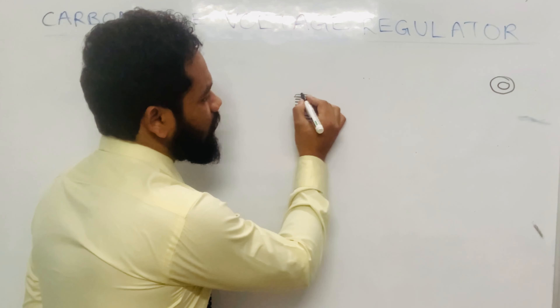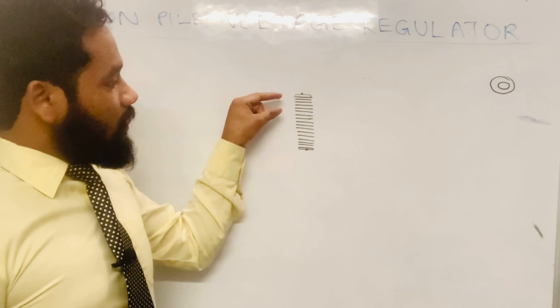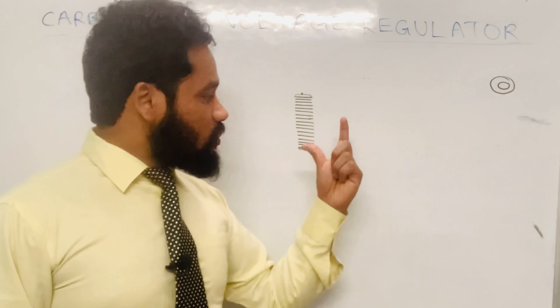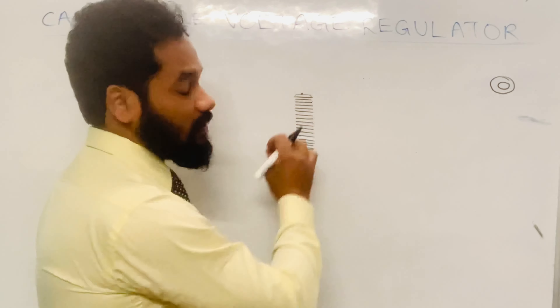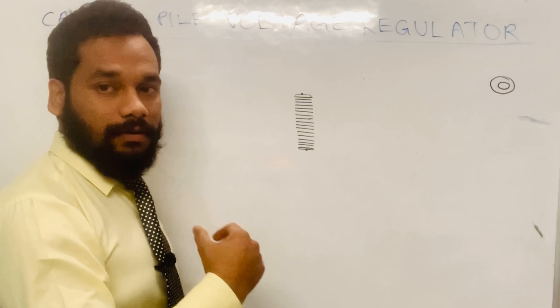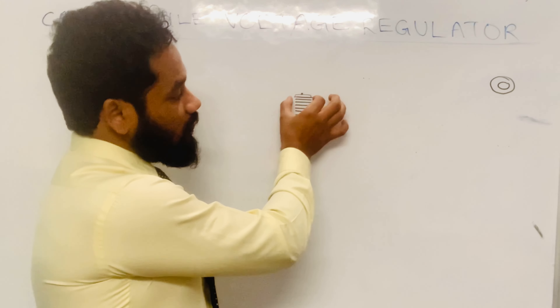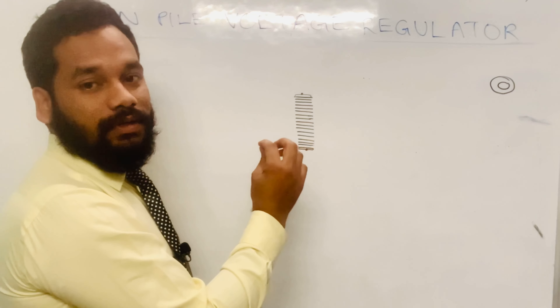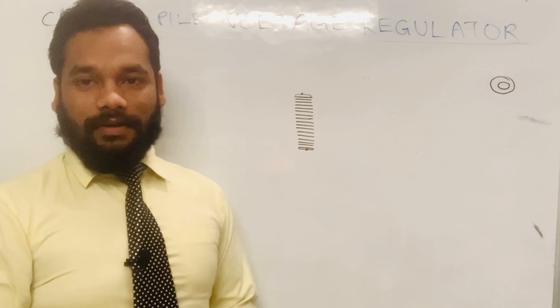These carbon discs or carbon washers form a pile, hence called the carbon pile. The carbon disc will have some resistance, and when we keep all these carbon discs or washers in a pile there will be some resistance. The resistance of this carbon pile will depend on the area or the diameter, the thickness of the carbon washer, and also the pressure which is applied on this carbon pile.